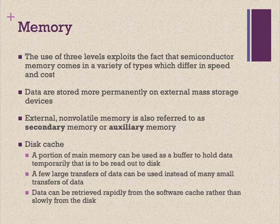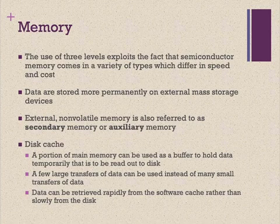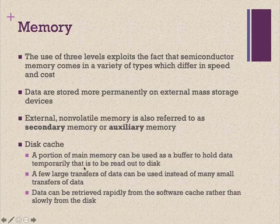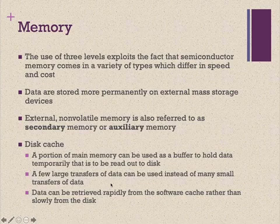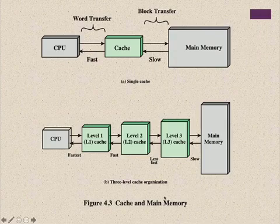Disk cache works as follows: when we have data in the cache we need to update it to RAM, and when we have data in RAM we need to update it to HDD. This update is time-consuming. So instead of updating one bit at a time, we store changed data in the disk cache and update the HDD after some time. A portion of main memory is used as a buffer to hold data temporarily to be read out to disk — a few large transfers instead of many small ones. Data can be retrieved rapidly from the disk cache rather than slowly from HDD.